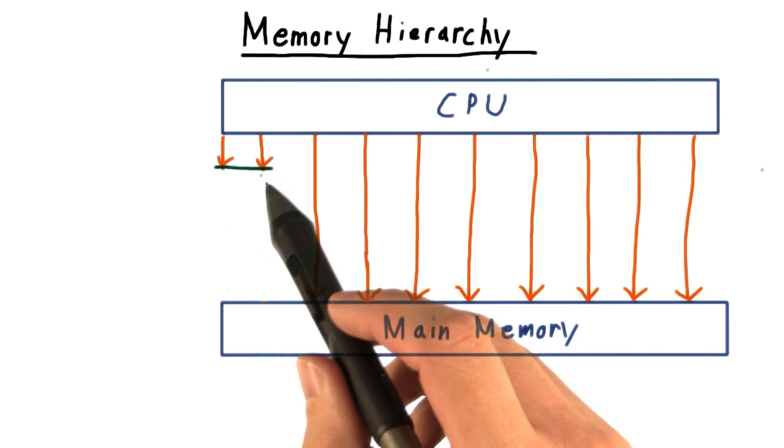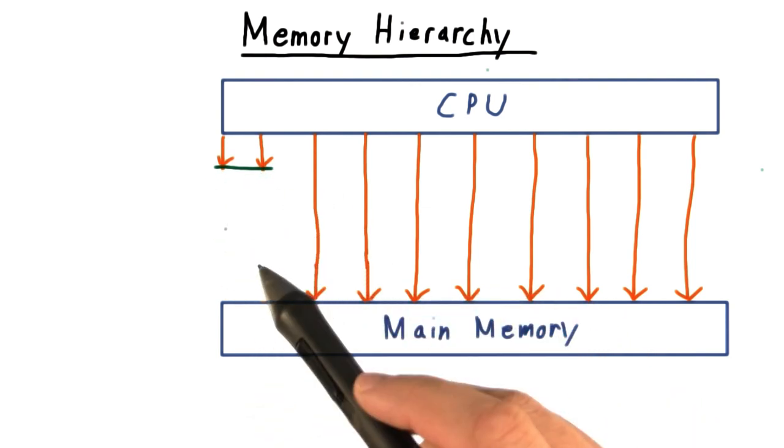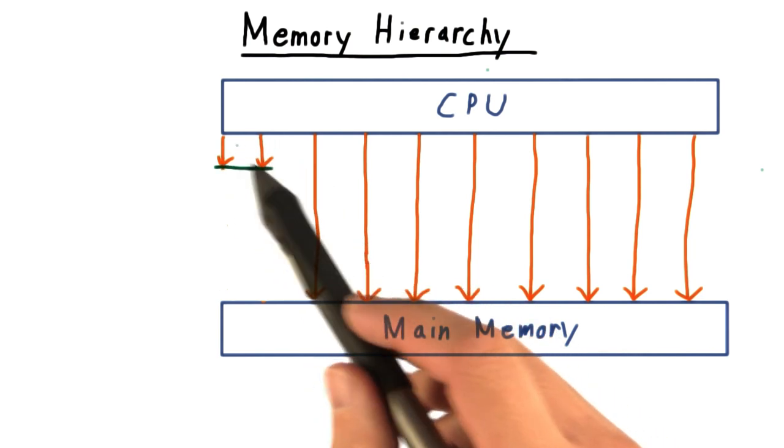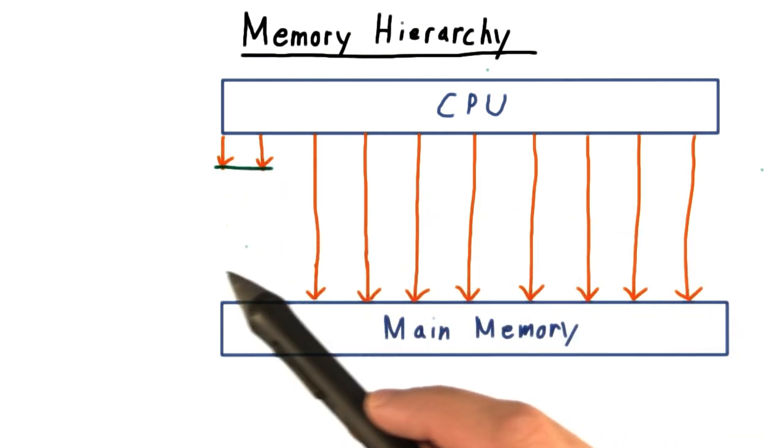We can have a small but fast cache and just accept that this would have a low hit rate, being only able to intercept quickly a few of the requests from the CPU.